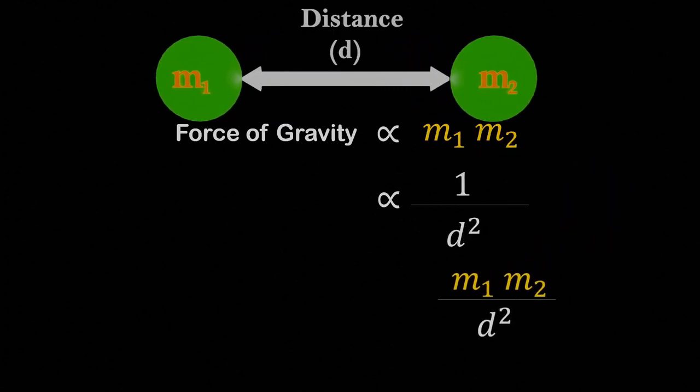Combining these equations and removing the proportionality sign gives us the universal constant of gravitation.